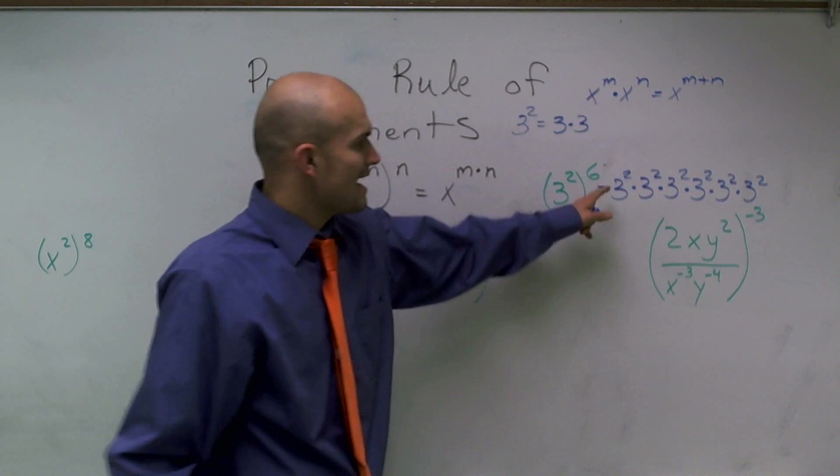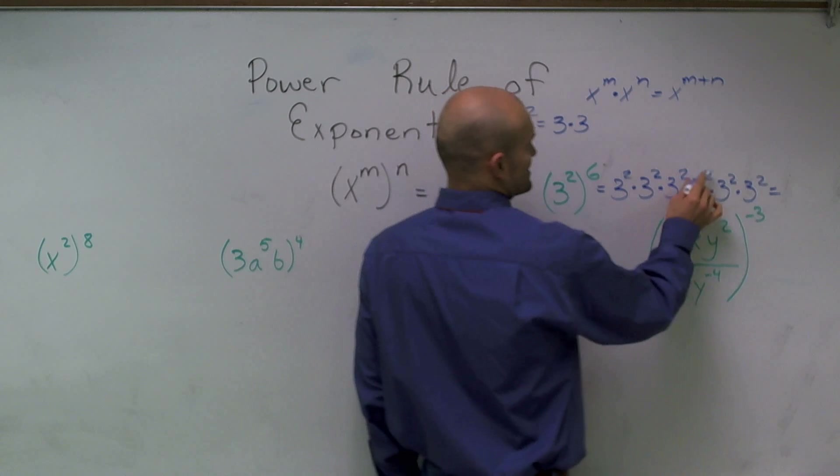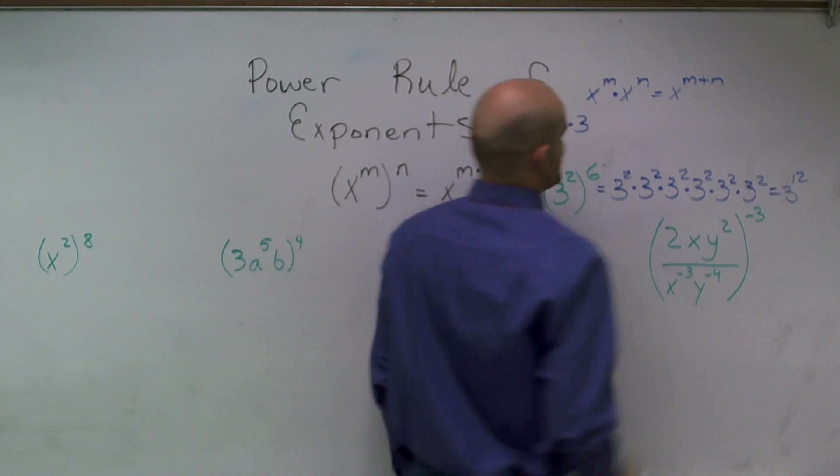So if I add all of my exponents here, what I'll end up with is 2, 4, 6, 8, 10, 12. 3 to the 12th power.